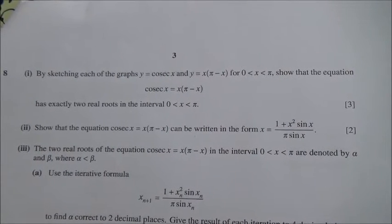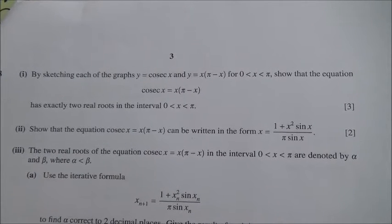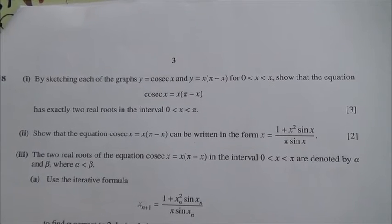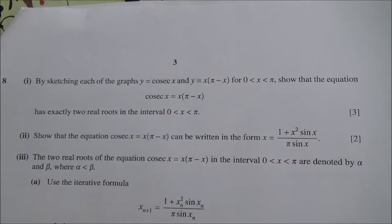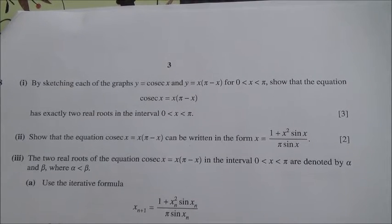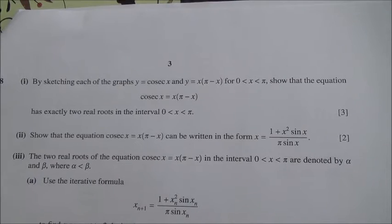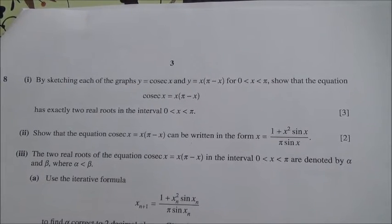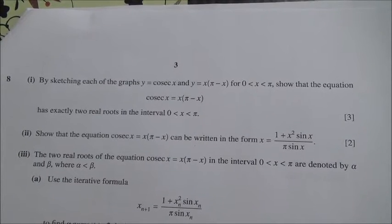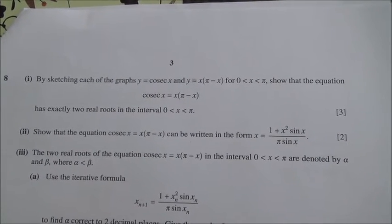Question number 8 taken from June 2014 HSC Advanced Level Maths P3. By sketching each of the graphs y = cosec x and y = x(π − x) for zero to π, show that the equation cosec x = x(π − x) has exactly two real roots in the interval zero to π.